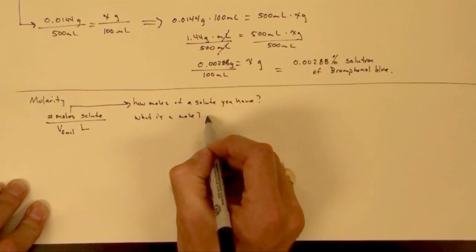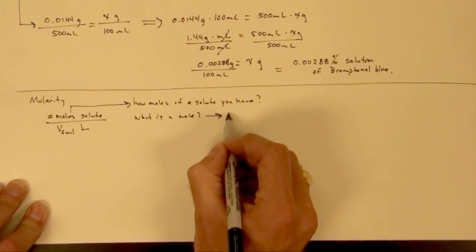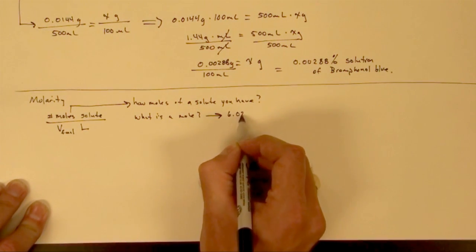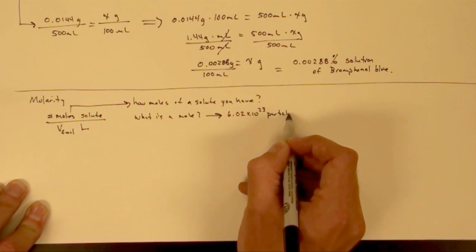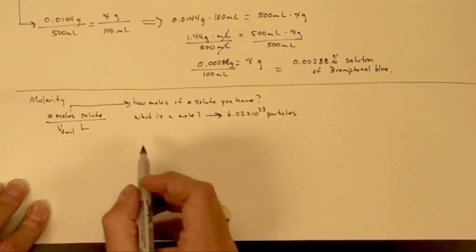A mole, quite simply, is when you have a mole of something, you will have 6.02 times 10 to the 23rd particles of it.